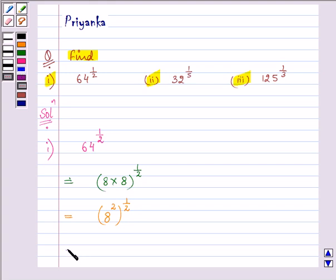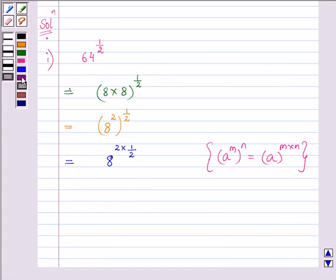Now when we open the brackets, 8's exponent will get multiplied by the exponent that is outside using the property that a to the power m to the power n is equal to a to the power m multiplied by n. Now 2 will get cancelled out with each other and we are left with 8 to the power 1 which can be written as 8 only. So 8 is the answer of our first part.